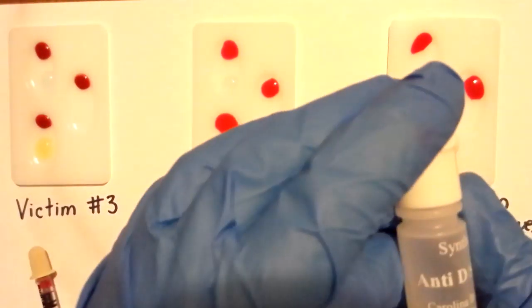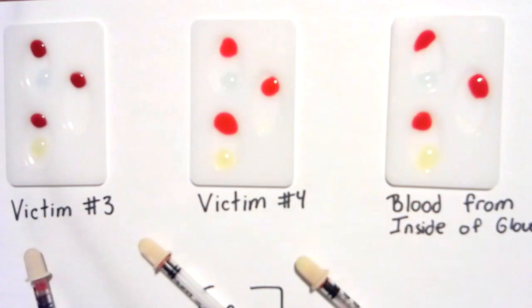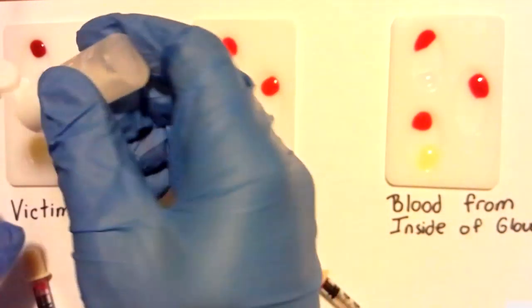And then we will use our anti-D for our Rh factor, and that will go on the slot on the right.